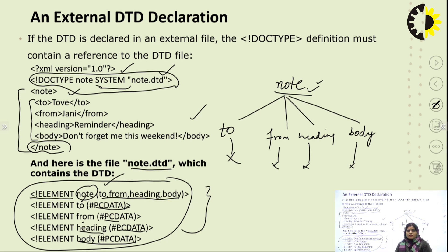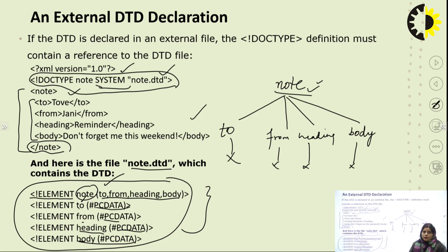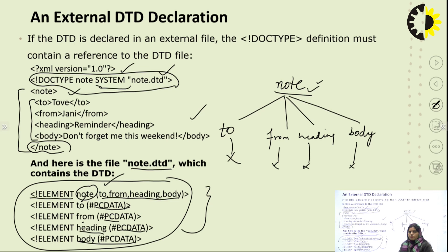The basic advantage of external DTD over internal DTD is that in external DTD, we can refer to any kind of DTD or document that has already been declared elsewhere, as per the requirement of the XML documentation. But in internal DTD, the DTD part and the XML part are merged together, so we do not have the option of referencing other DTDs — only the one written inside the XML document can be used.